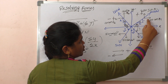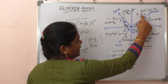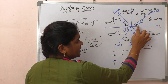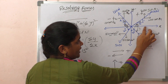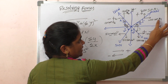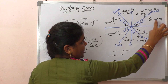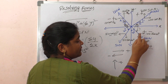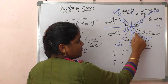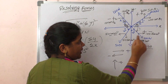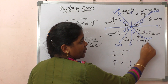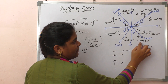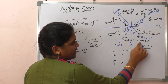One important point: if theta is the angle made with the x-axis, then the x-component is cos(theta). But if theta is the angle made with the y-axis, then the y-component becomes cos(theta). You should remember this point very carefully.